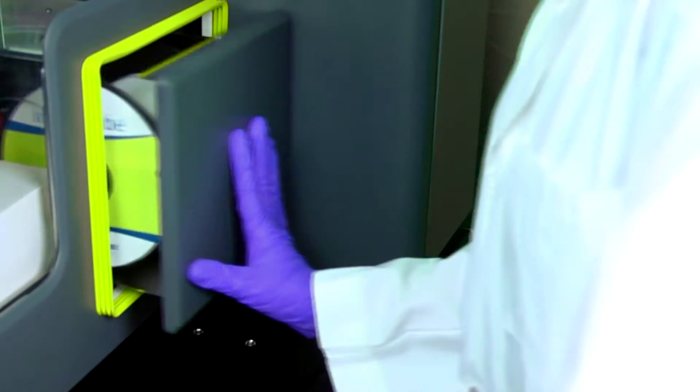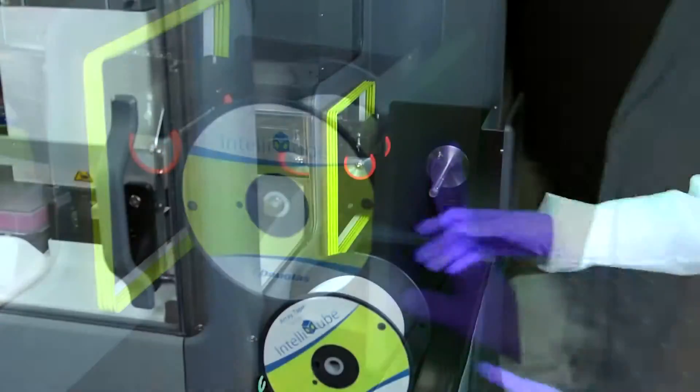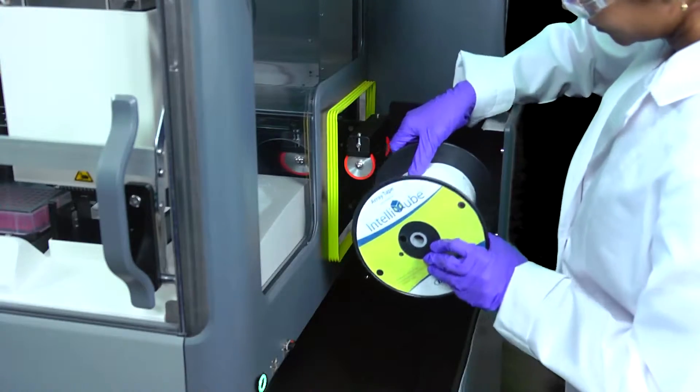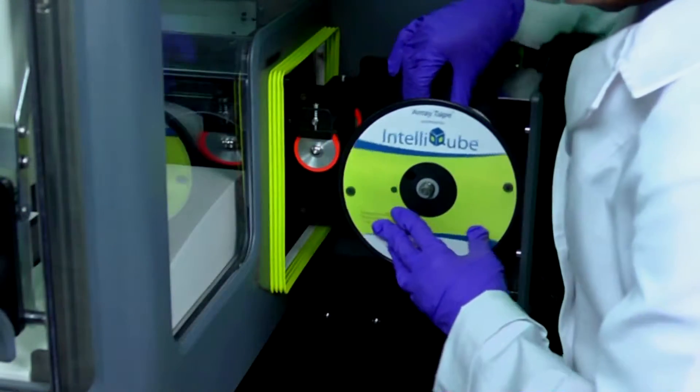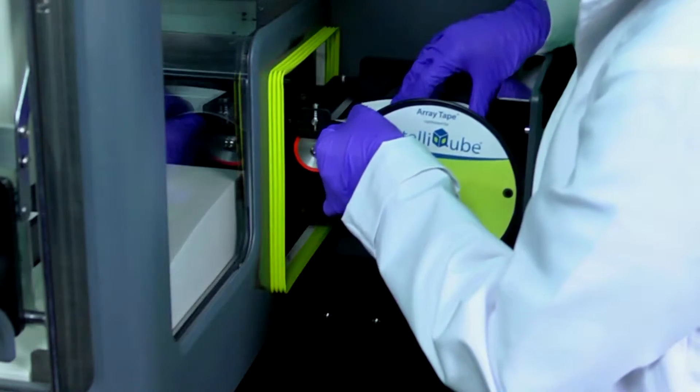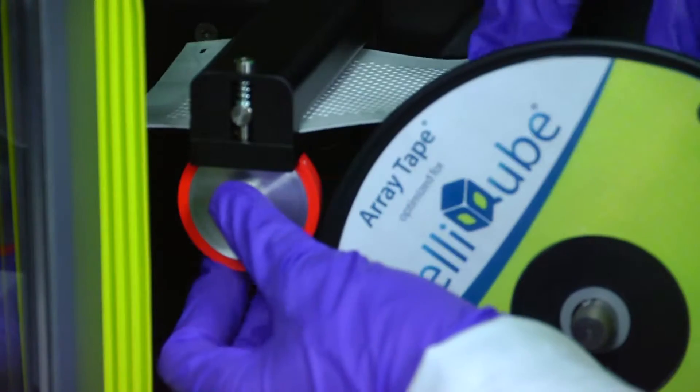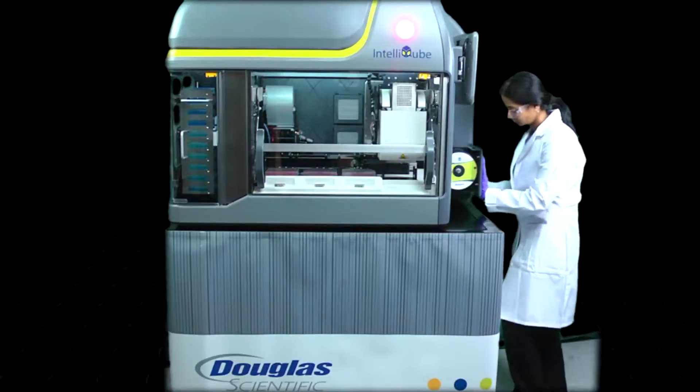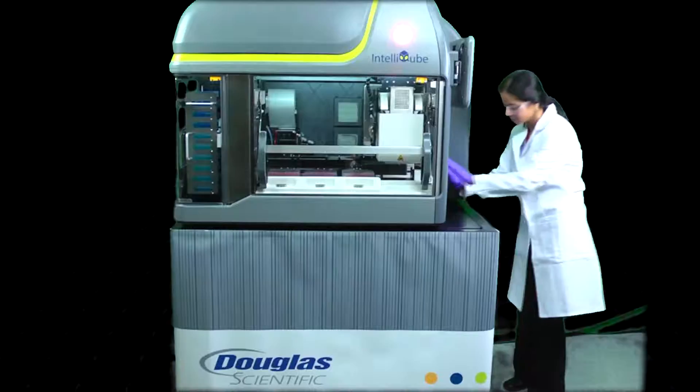The instrument is optimized for use with an opaque white polypropylene Array Tape specifically designed for the IntelliCube. In addition to our standard 384 well Array Tape pattern, our new 768 well interlaced pattern enables even higher throughput.